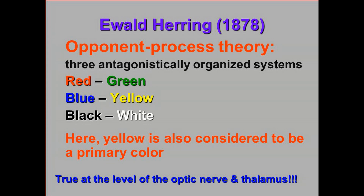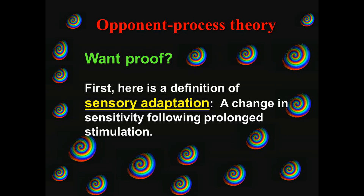I said I was going to show you some evidence you can see with your own eyes regarding opponent process theory. First, I need to introduce a new vocabulary term: sensory adaptation. Sensory adaptation refers to a change in sensitivity following prolonged stimulation. The classic example involves what happens when you go from a brightly lit street into a dark movie theater — your eyes have been adapted to bright sunlight and you usually have to stand at the top of the aisle until your eyes become adapted to the dark.